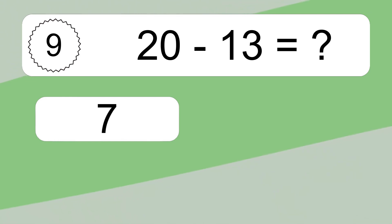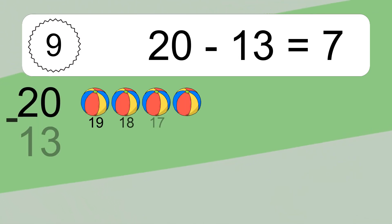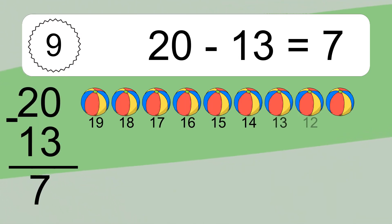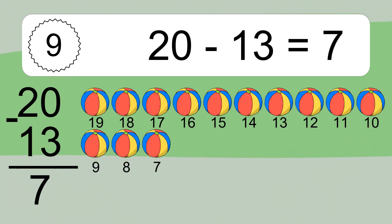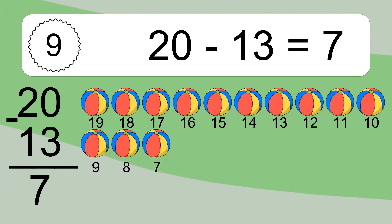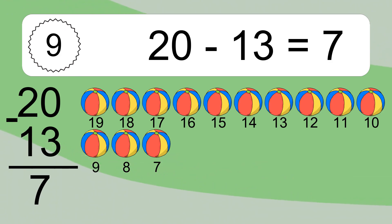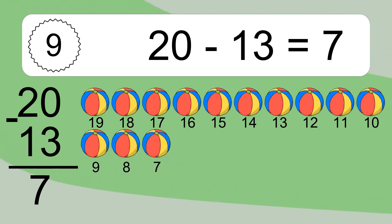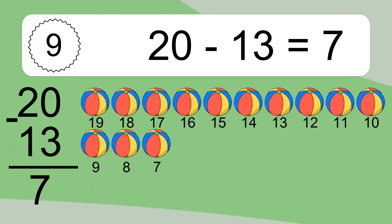20 minus 13 equals what? 20 minus 13 equals 7.